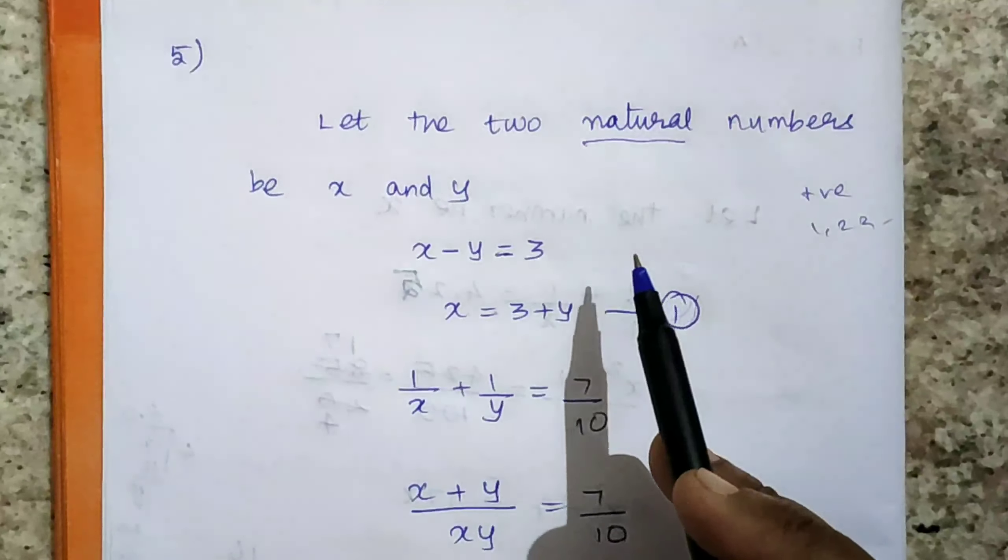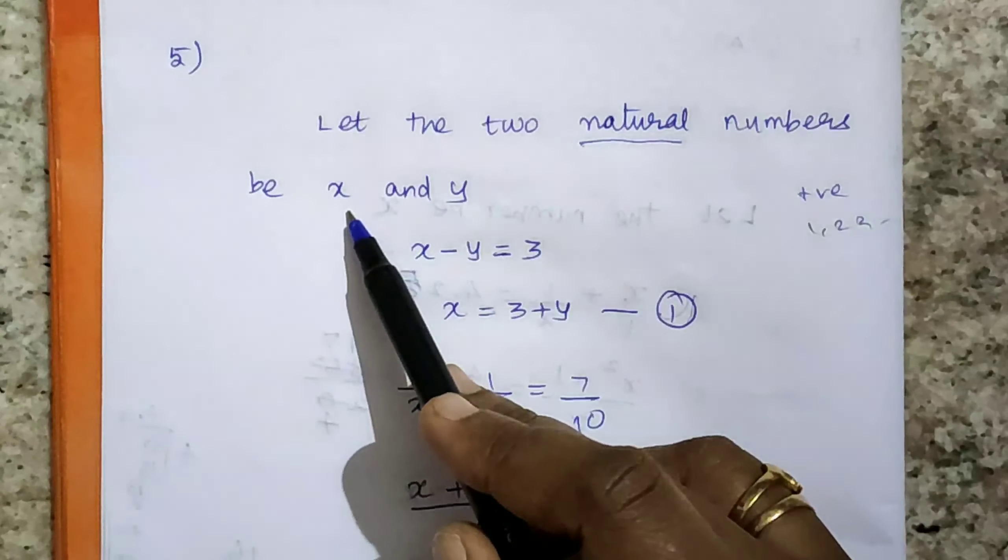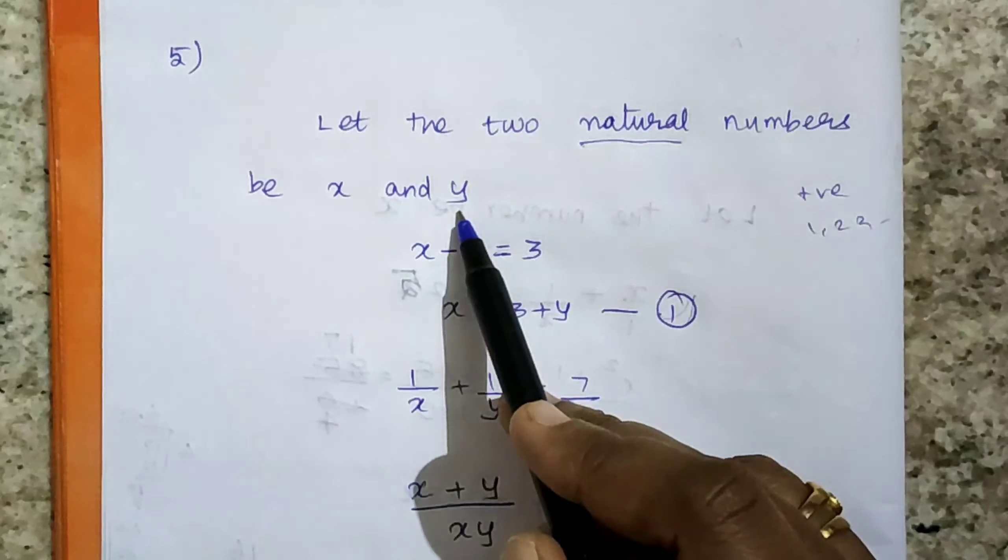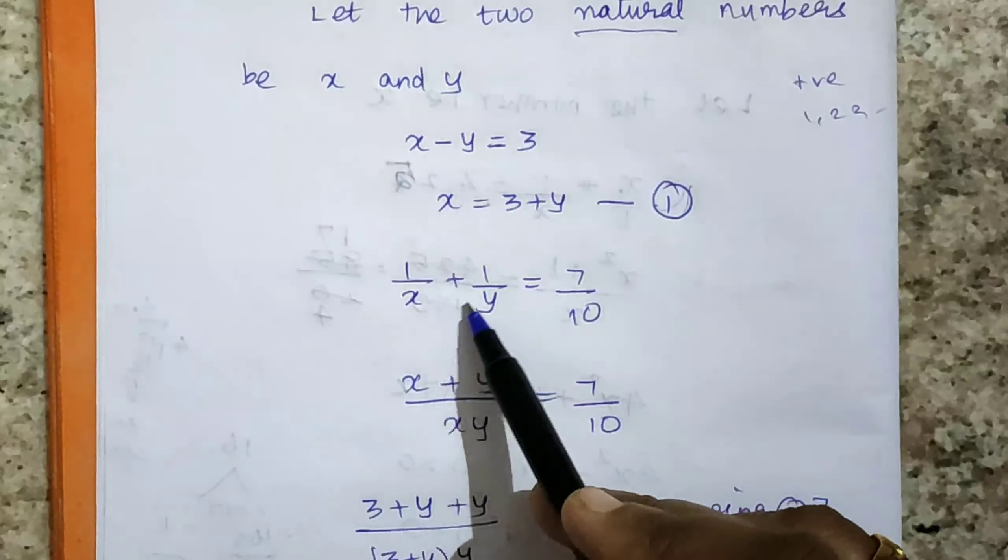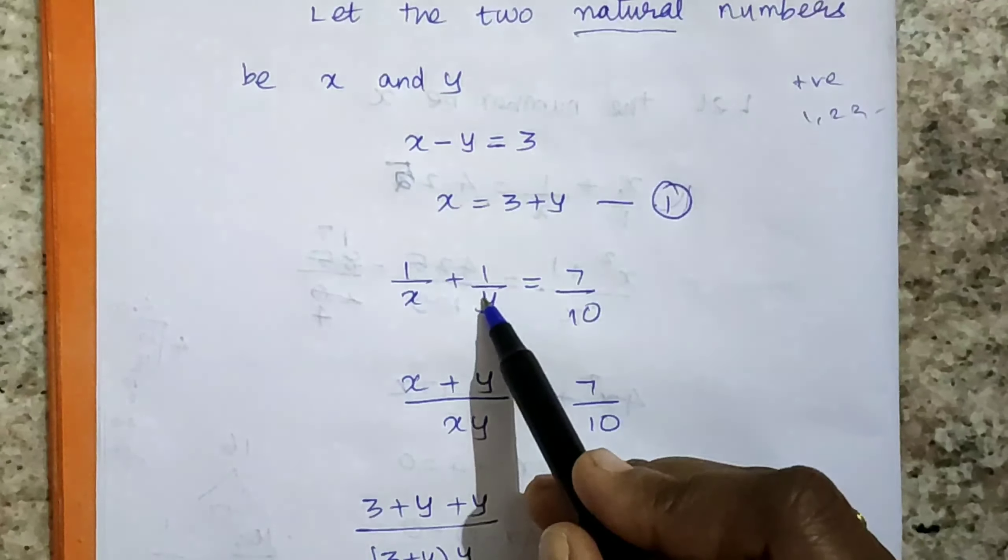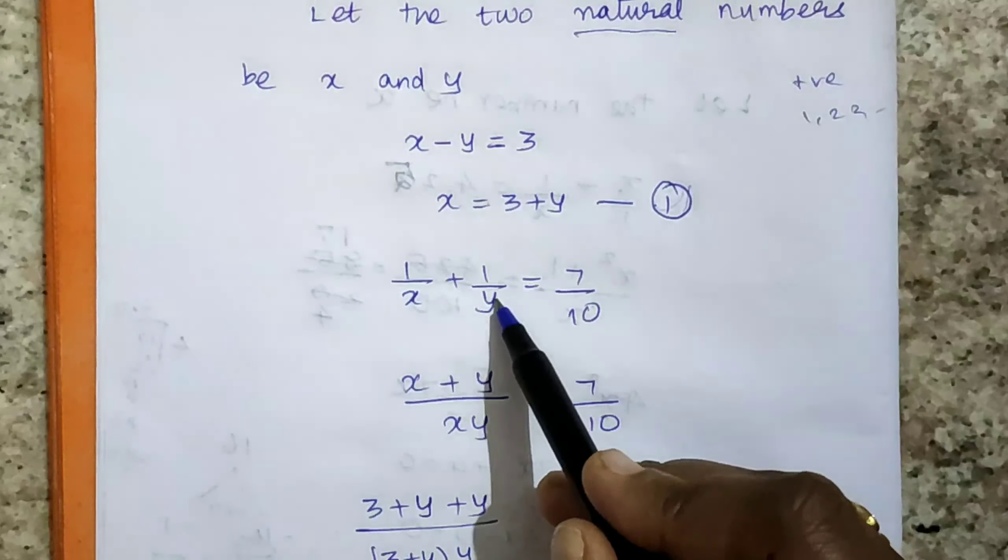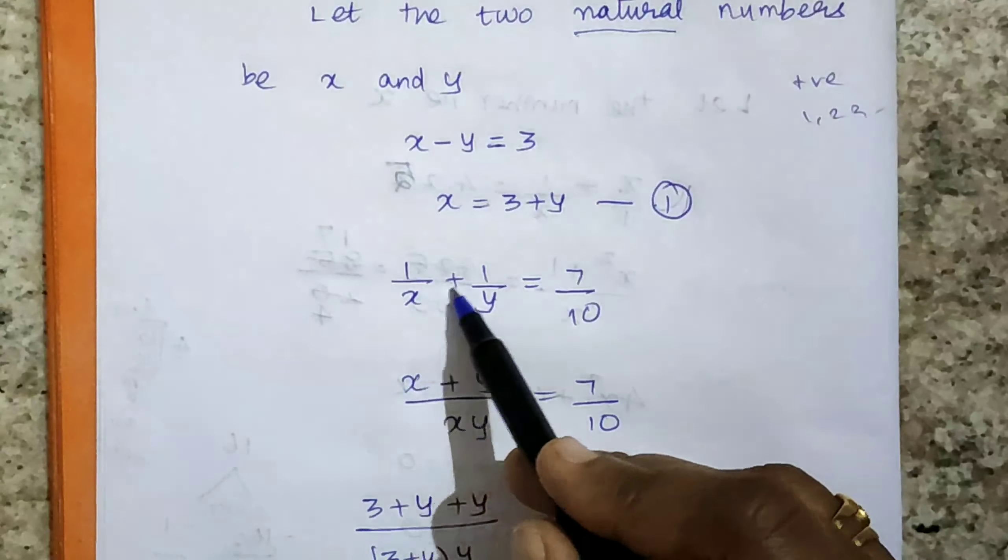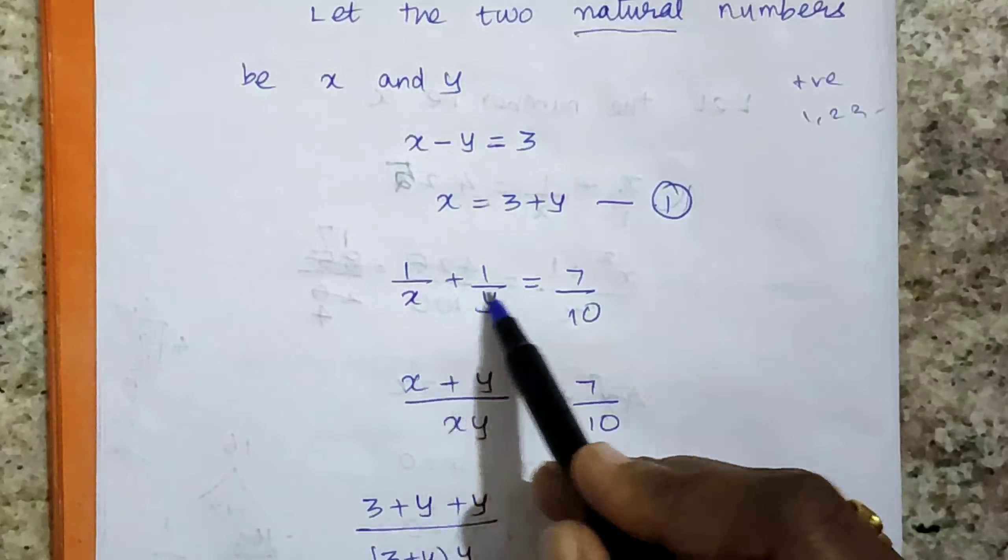Next, sum of their reciprocals. Reciprocal of x is 1/x, reciprocal of y is 1/y, so 1/x plus 1/y equals 7/10. Here we are taking cross multiplication LCM. So y times 1 is y, x times 1 is x, giving x plus y over xy equals 7/10.